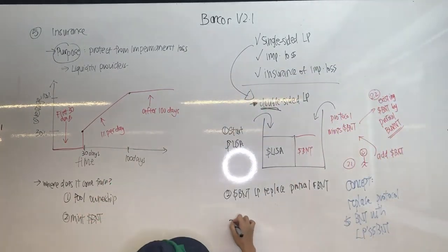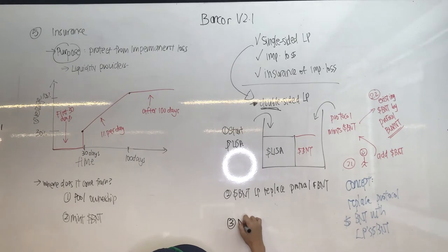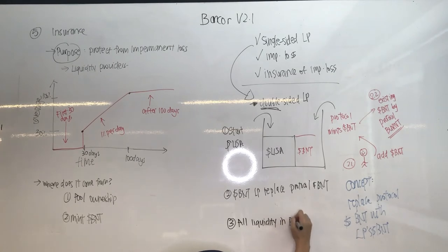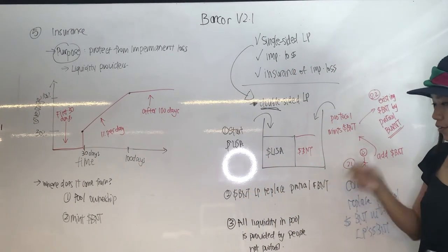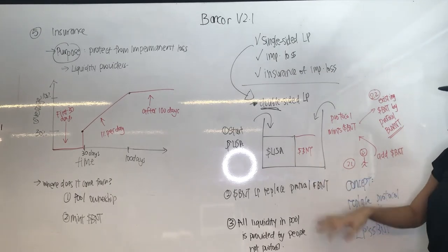So the idea is that all liquidity in the pool is provided now by people, by users, not by protocols. This happens when the protocol or this liquidity pool is earning a lot of revenues, generating a lot of transaction fees. And it's very attractive for other people to come in. So people come in and people will replace the BNT that's minted by the protocol.